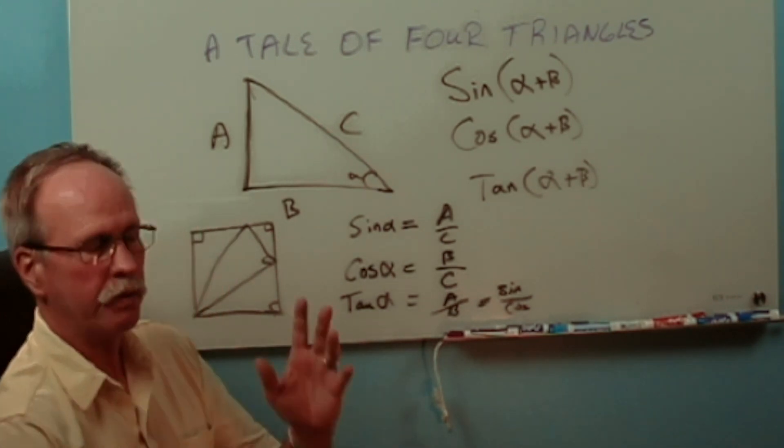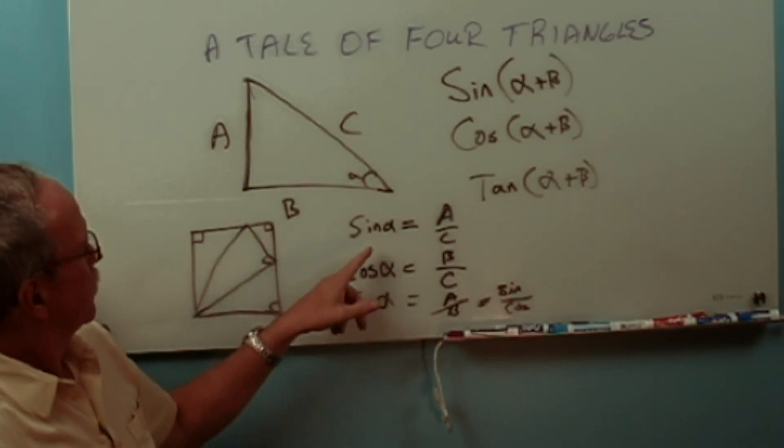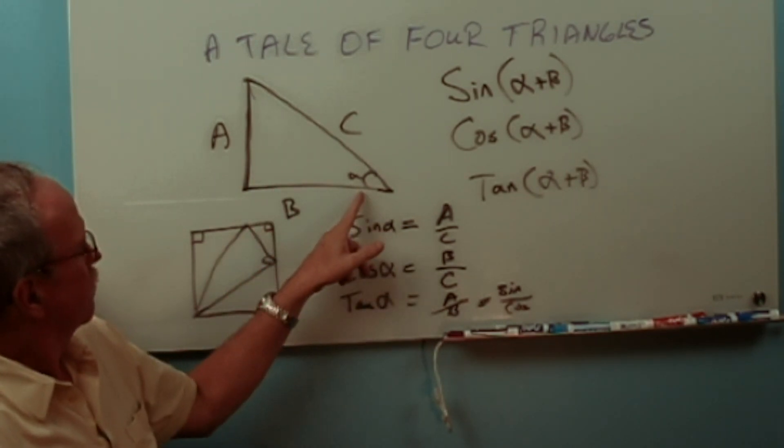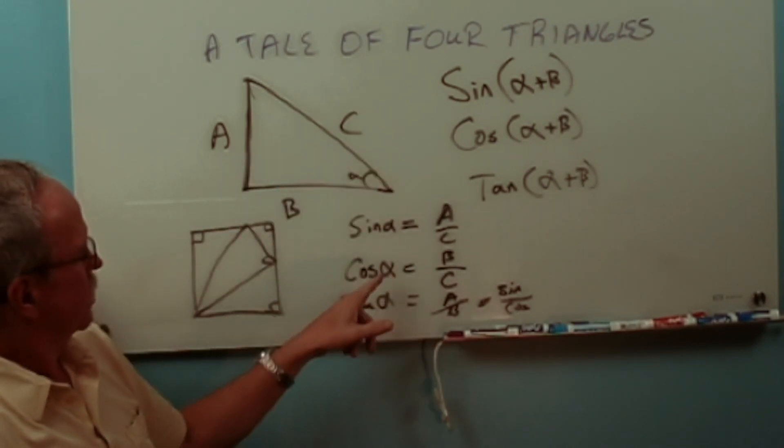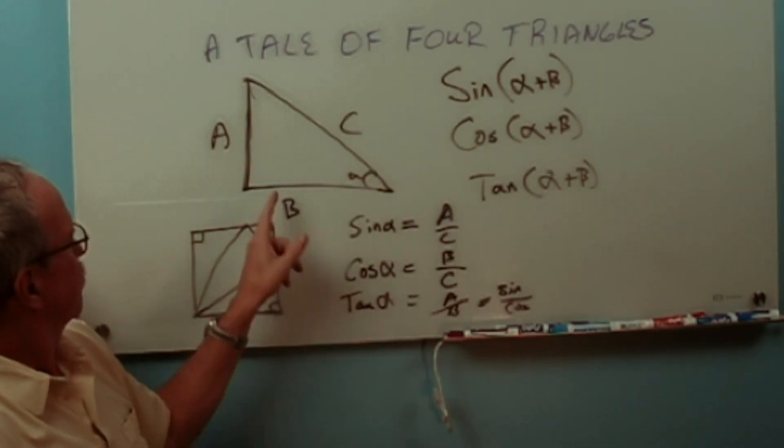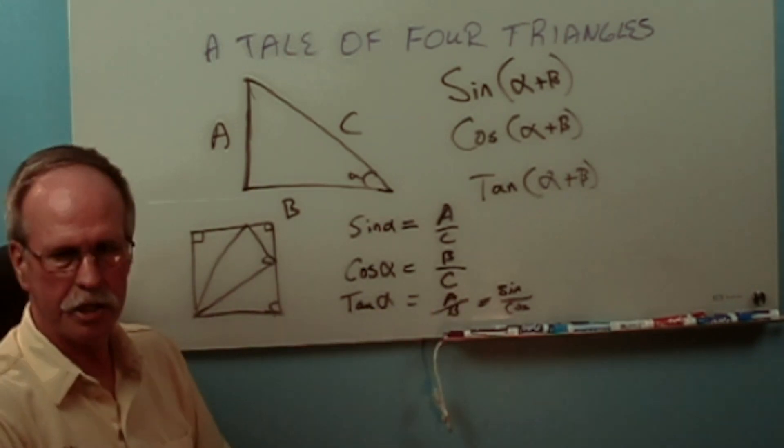Let's just go ahead and review real quick what we know so far. If you have a triangle like so, the sine of the angle alpha here is A over C or the opposite over the hypotenuse. Cosine, likewise, is the adjacent over the hypotenuse and tangent is the opposite over the adjacent or sine over cosine.